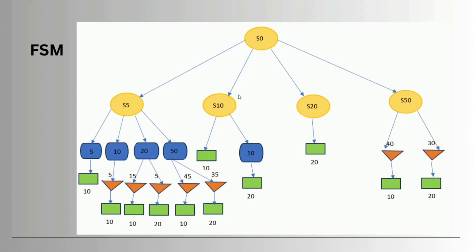If we add 50 rupee it will return back 45 for the 10 rupee product and return 35 for the 20 rupee product. For state S10, if we give 10 rupee into the vending machine it will give the 10 rupee product, or if we insert another 10 rupee it will give the 20 rupee product. For 50 rupee inserted in S10 it will give the 10 rupee product and return 40, and for the 20 rupee product it will return 30.